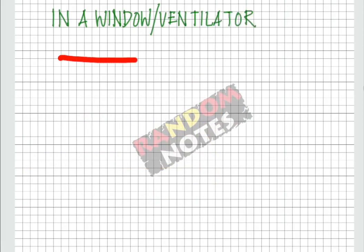In a window or a ventilator, there are two horizontal members, the head and the sill piece, and the two posts like in a door.